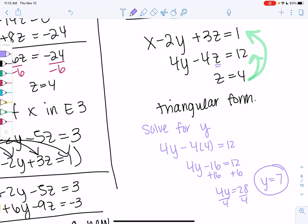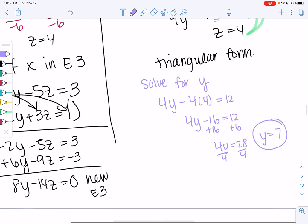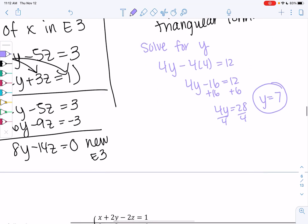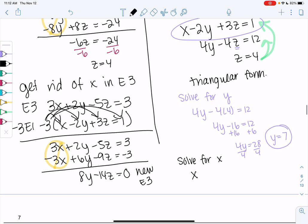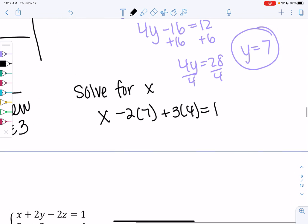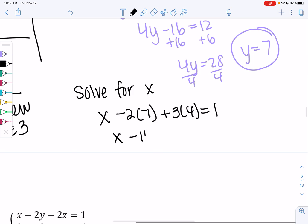And then we'll just back sub one more time to find x in that first equation. So we get x minus 2y, so minus 2 times 7, plus 3 times z, so 3 times 4, equals 1. And so we get x minus 14 plus 12 equals 1. So x minus 2 equals 1, so we get x is 3.